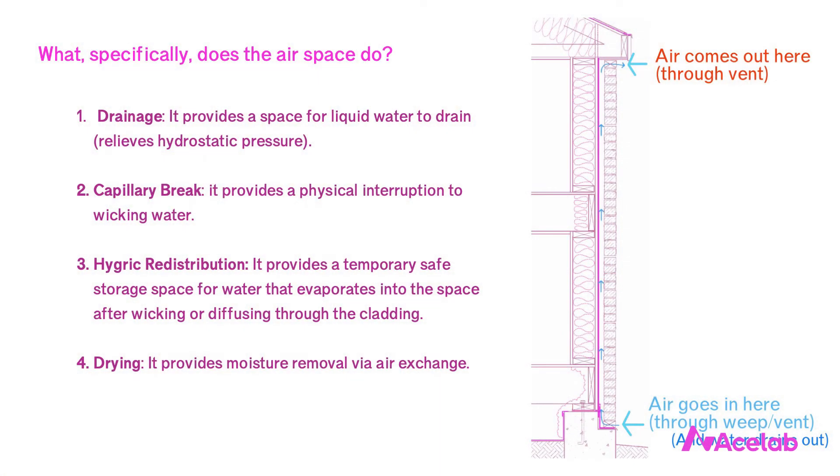Lapped vinyl siding, for example, doesn't require a whole lot of space between the water control membrane and the cladding to work. A brick veneer, which has the capacity to hold a lot of water, requires more space for drainage and drying. And here we run up against the limitations of our terminology — neither the term drained wall nor rain screen tells us how large that space between the cladding and the water control membrane ought to be.